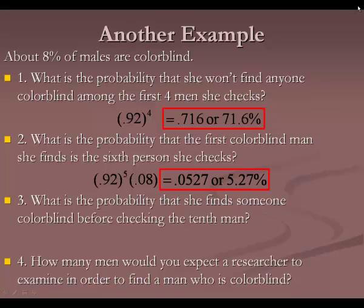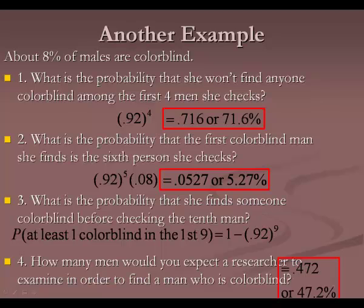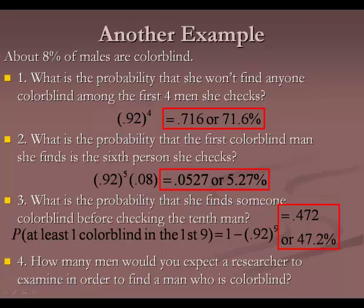Question 3: what is the probability that she finds someone colorblind before checking the tenth man? That means somewhere in the first nine we had a colorblind person — it's another way of saying at least one colorblind person in the first nine. At least problems go backwards: one minus the probability that none are colorblind in the first nine, which is one minus 0.92 to the ninth, giving 0.472, or 47.2%.